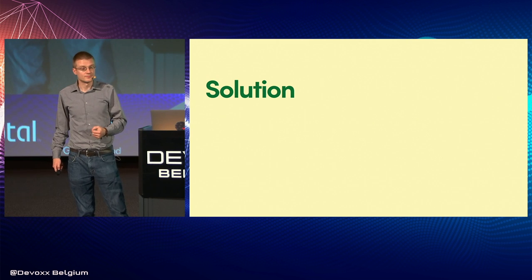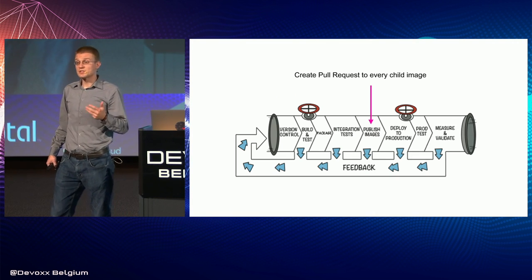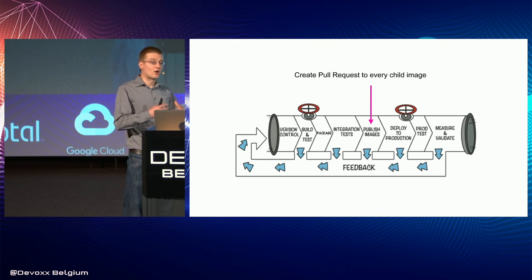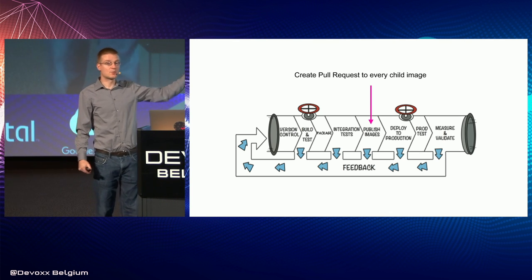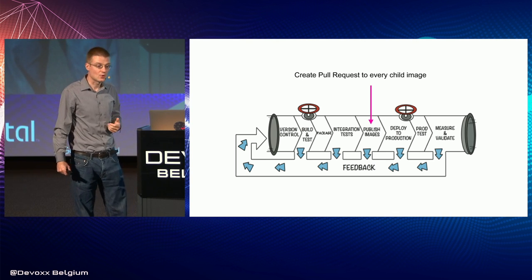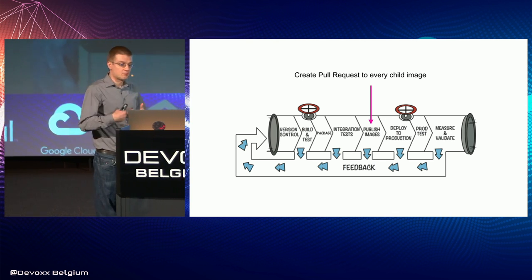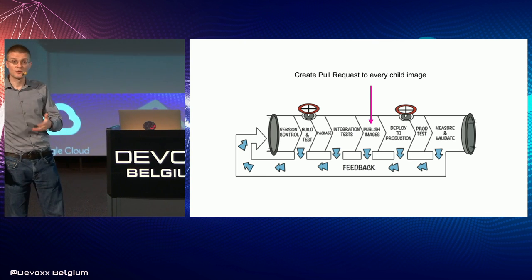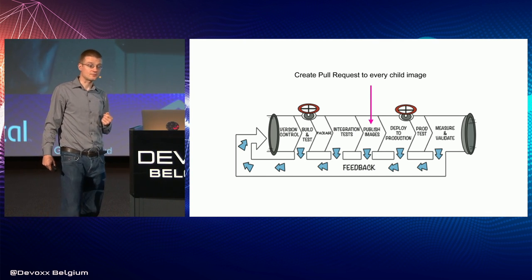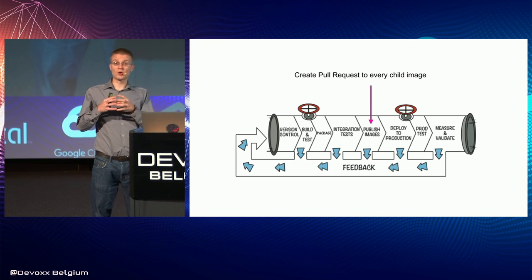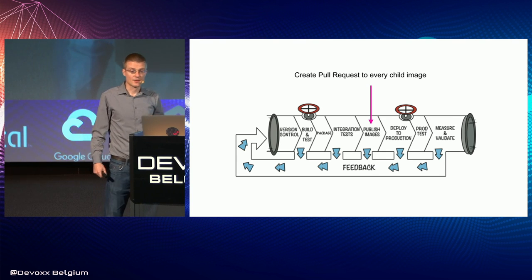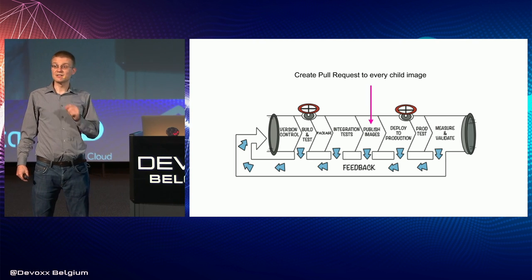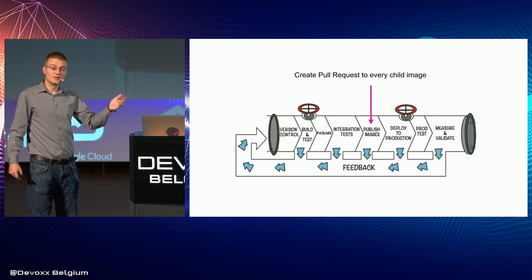So what can we do? If you're familiar with test and release pipelines — they are automated pipelines that respond to code changes in Git or your version control — first you build and test, then you create a Docker image. Then you hopefully integration test that Docker image by running it and running some tests against it. Then you publish those Docker images that you know work to a Docker registry. The solution we came up with is to generate pull requests after that publish to any child image that uses the image we just published.